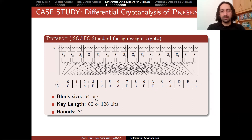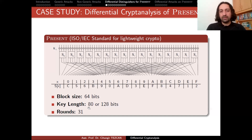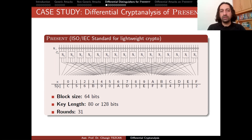PRESENT is a block cipher which is still a lightweight cryptography standard — an ISO standard. The block size is 64 bits, and in the diagram every line represents a single bit. There are two key length variants: 80 bits and 128 bits. The key schedule algorithm changes according to your choice of key length, but each key schedule generates 64-bit round keys. Each round key is XORed with the input.